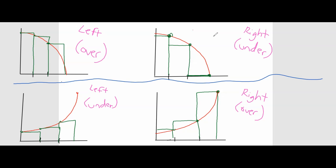Pause the video and think about that. Think about whether you could figure out if it's going to be an over or an under-approximation based on a certain characteristic about the function. Well, it turns out the function on top was a decreasing function over that entire interval, and the bottom function was increasing over the entire interval. So for a decreasing function, the left Riemann sum is an over-approximation and the right is an under. For an increasing function, the left may be an under-approximation and the right may be an over-approximation.